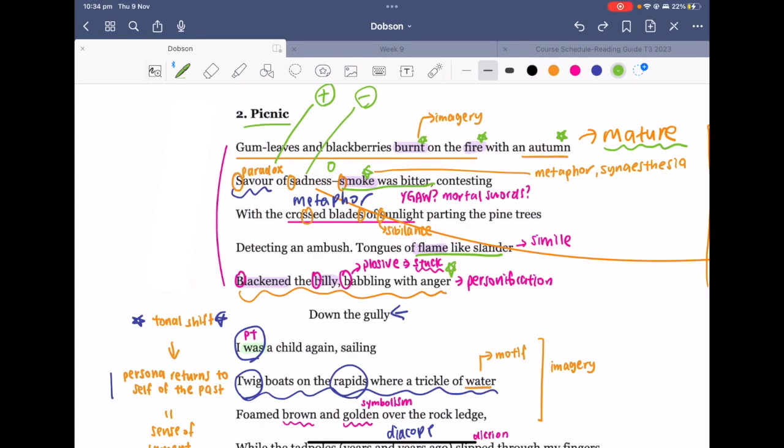You could also make note of how the crossed blades of sunlight here—yes it is a metaphor—but it also reminds us of the line "mortal swords are crossed" in Young Girl at a Window, which was a line that sought to capture the emotional tension felt by the young persona standing at the edge of childhood.